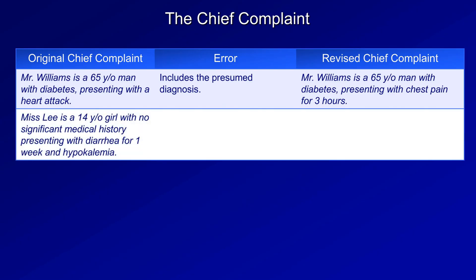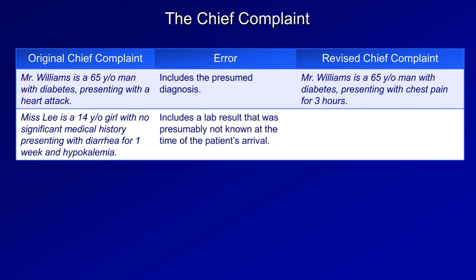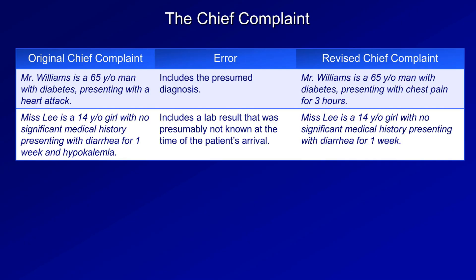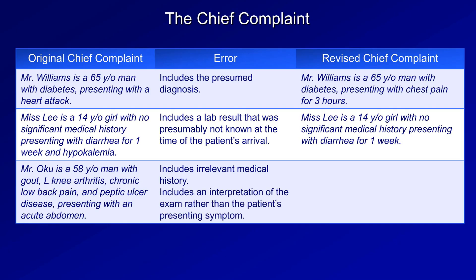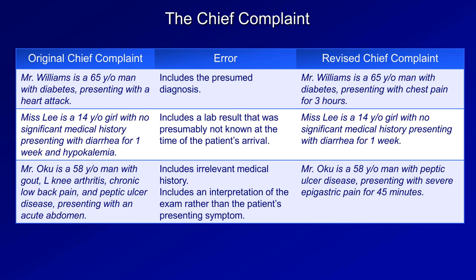More examples: Ms. Lee is a 14-year-old girl with no significant medical history presenting with diarrhea for one week and hypokalemia — the error is including a lab result not known at initial arrival; the corrected version omits the hypokalemia. Mr. Oku is a 58-year-old man with gout, left knee arthritis, chronic low back pain, and peptic ulcer disease presenting with an acute abdomen — two errors: irrelevant medical history and an exam interpretation instead of the presenting symptom. Corrected: Mr. Oku is a 58-year-old man with peptic ulcer disease presenting with severe epigastric pain for 45 minutes.